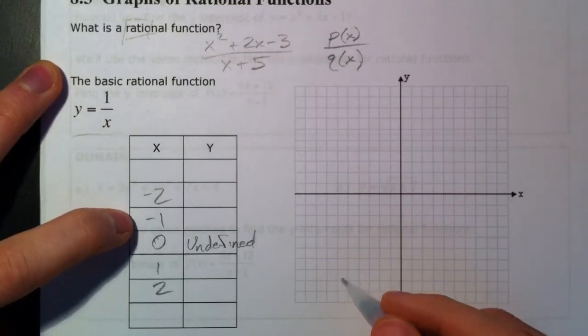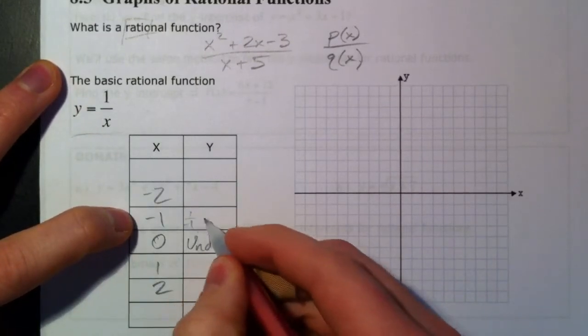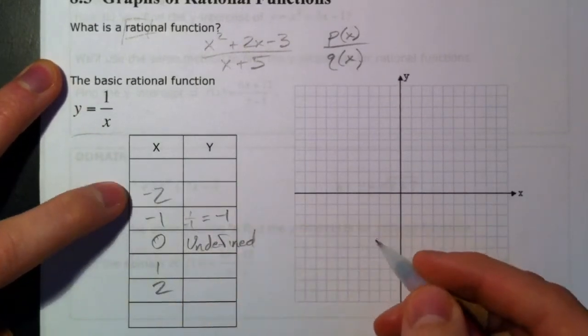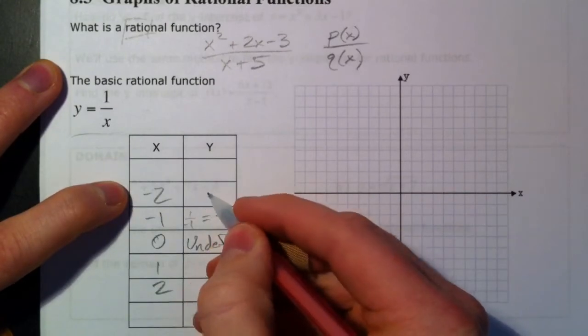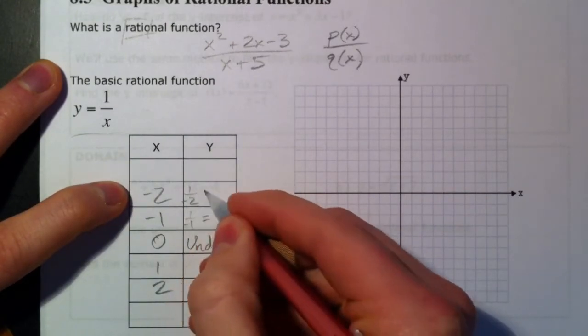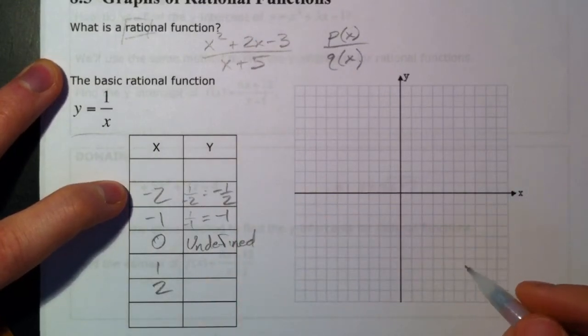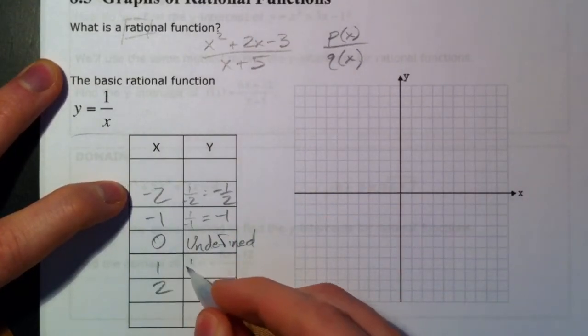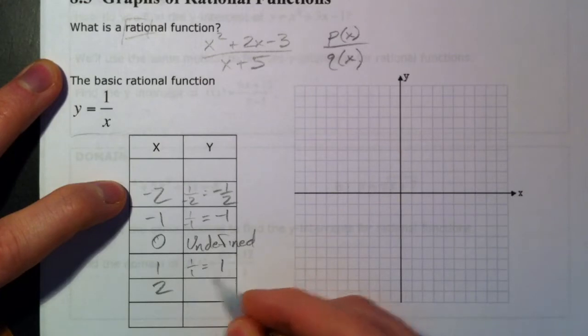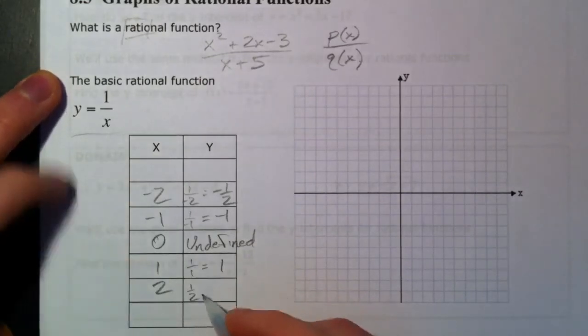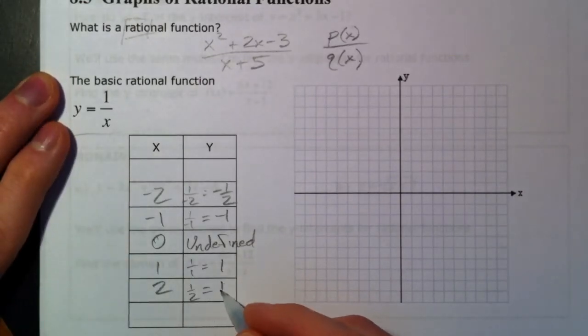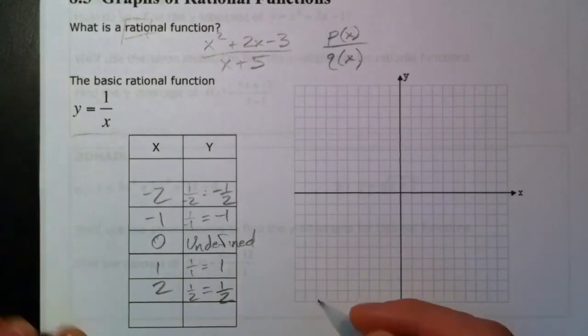1 divided by negative 1 is negative 1. 1 divided by negative 2 is a negative 1 half. Again, the negative, it doesn't matter sort of where it applies to. 1 divided by 1 is just simply 1. And 1 divided by this 2 being x is 1 half.